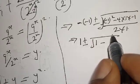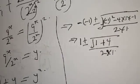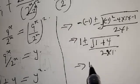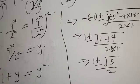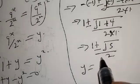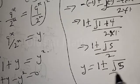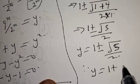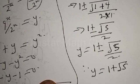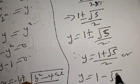This simplifies to 1 plus or minus square root of 1 plus 4, over 2, which gives 1 plus or minus root 5 over 2. Therefore y equals 1 plus root 5 over 2, or y equals 1 minus root 5 over 2.